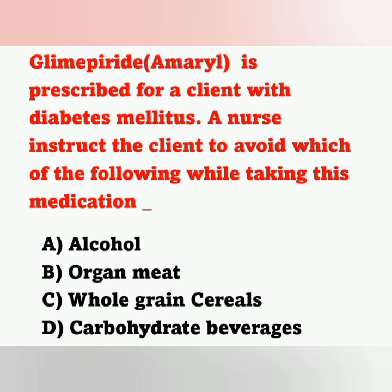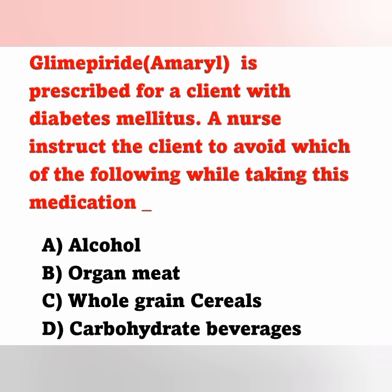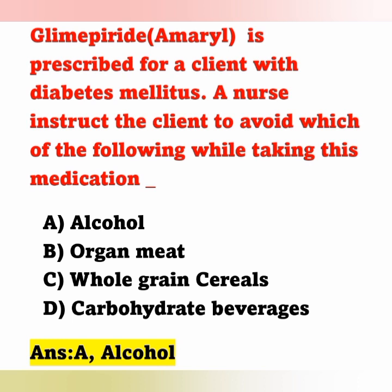Next question: glimepride is prescribed for a client with diabetes mellitus. A nurse instructs the client to avoid which of the following while taking this medication? Option A: alcohol. Option B: organ meat. Option C: whole grain cereals. Option D: carbohydrate beverages. Glimepride is an oral hypoglycemic agent. If the patient consumes alcohol along with glimepride, a disulfiram-like reaction may occur, causing symptoms like flushing and palpitations. The patient should avoid alcohol. Option A is the correct answer.